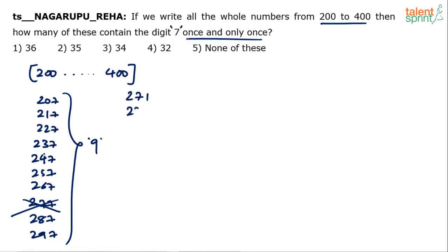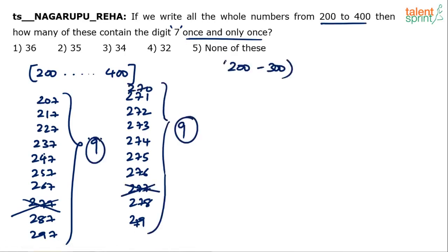So, 271, 272, 273, 274, 275, 276, 277, 278, 279. You cannot consider 280. But then there was 270 also. This happens 18 times.